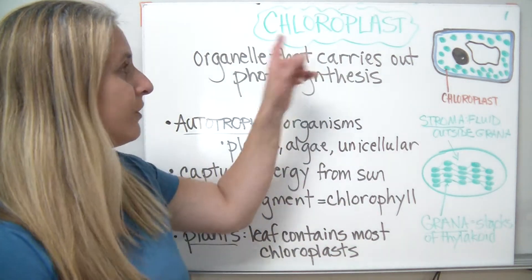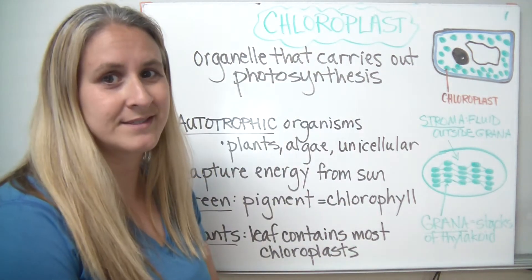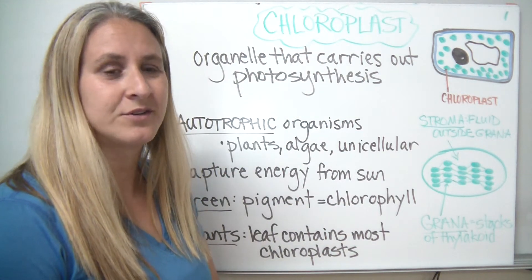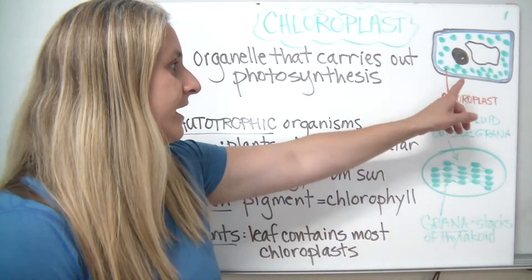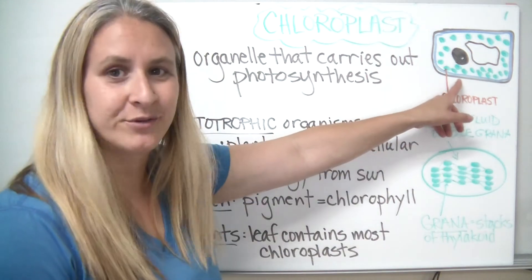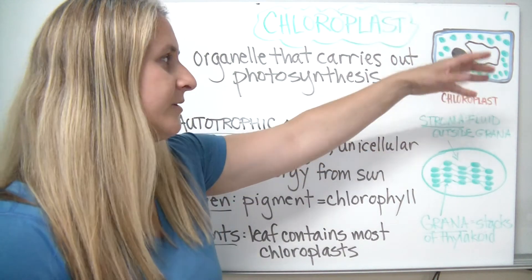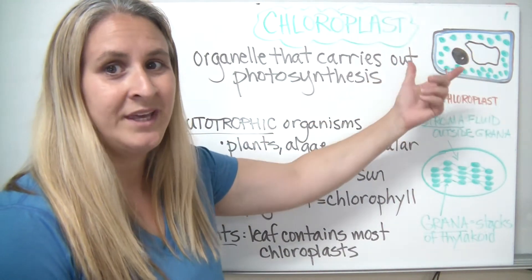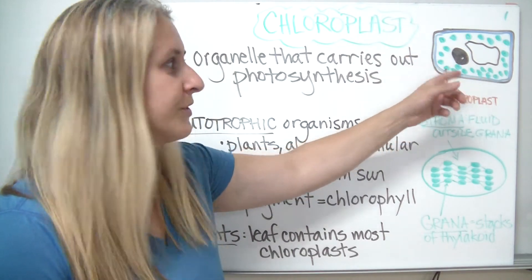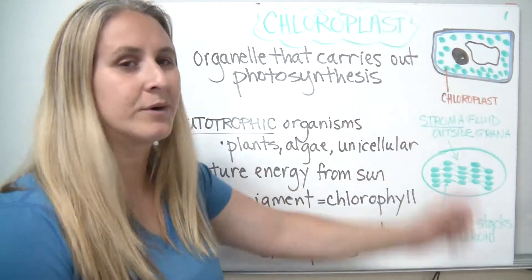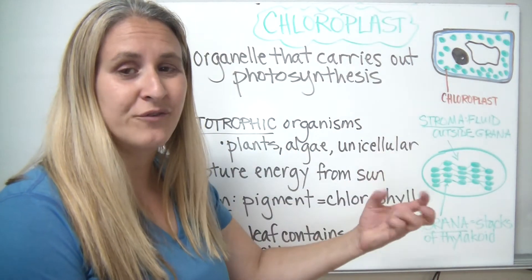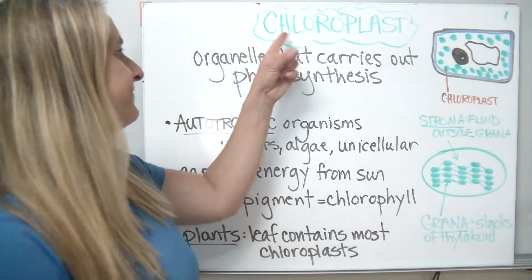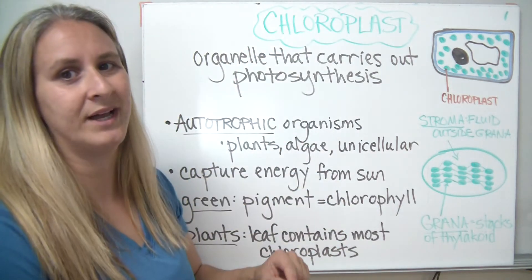Today's discussion is about chloroplasts. We've been journeying through our cells so far and we've made it through the cell wall, the cell membrane, we ventured into the cytoplasm, and now we're going to look at some of the organelles within the cytoplasm. Our first organelle we're going to take a trip to is the chloroplast.